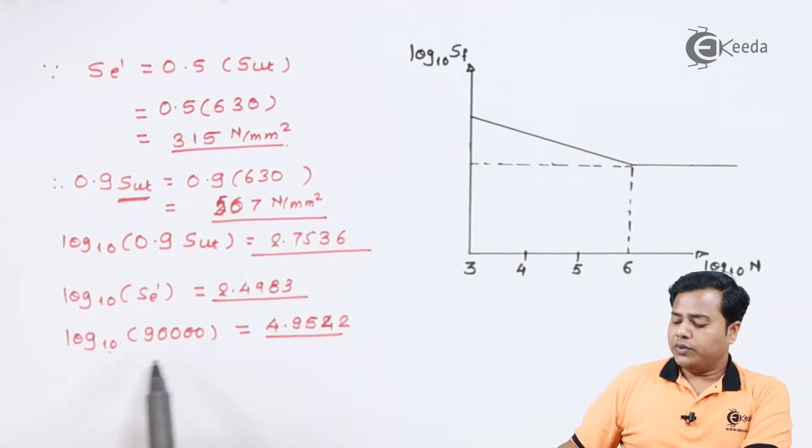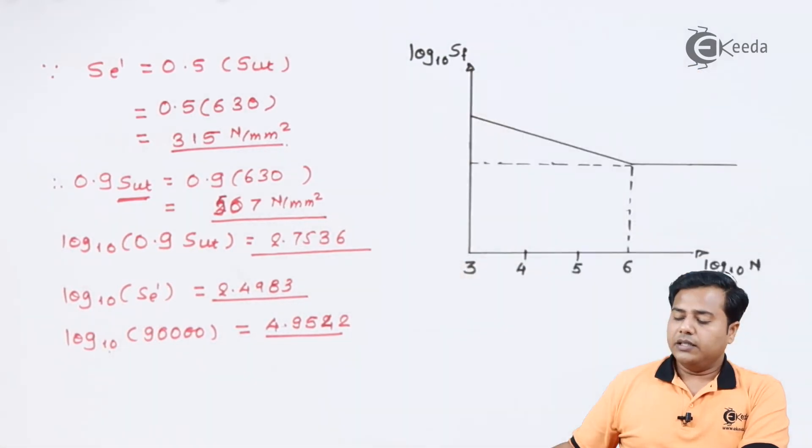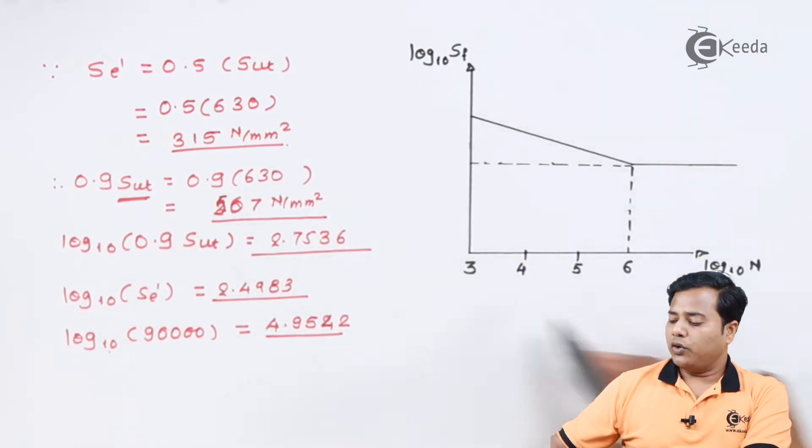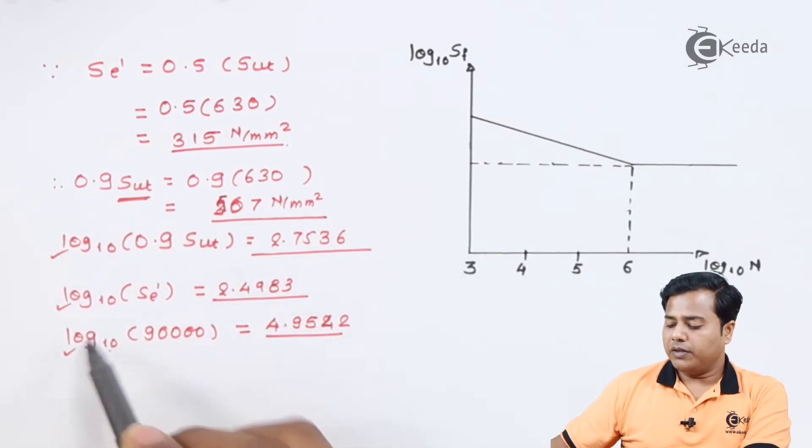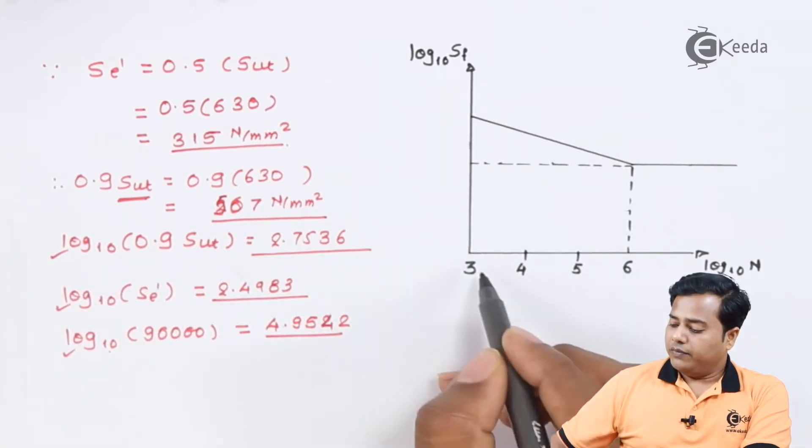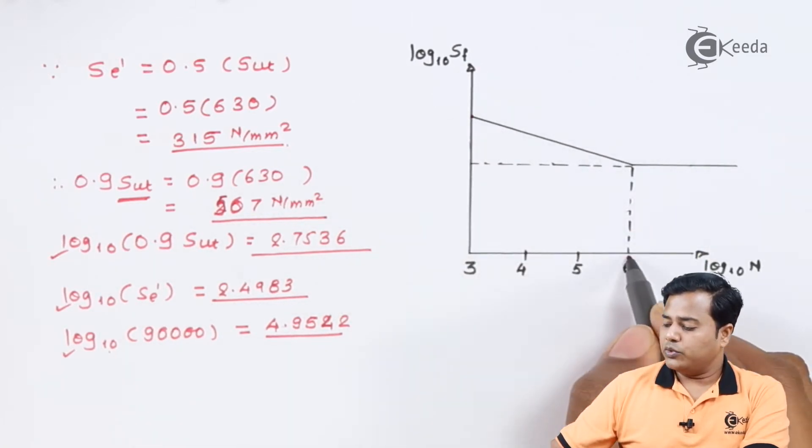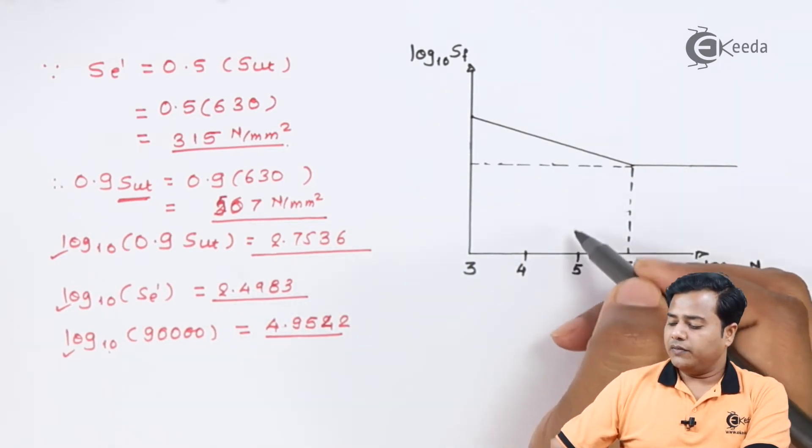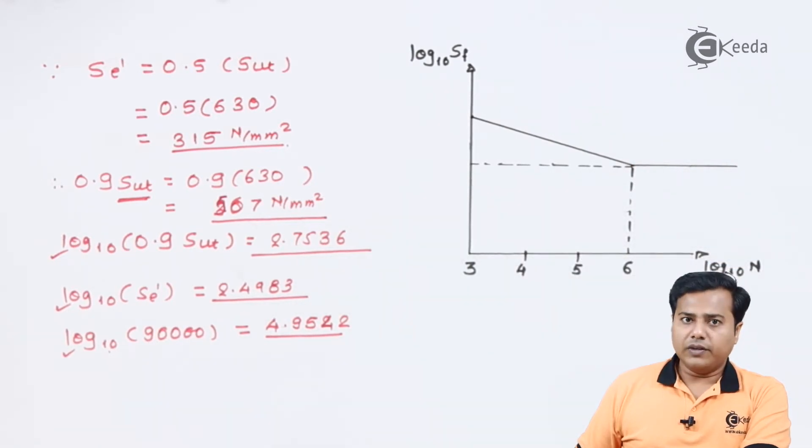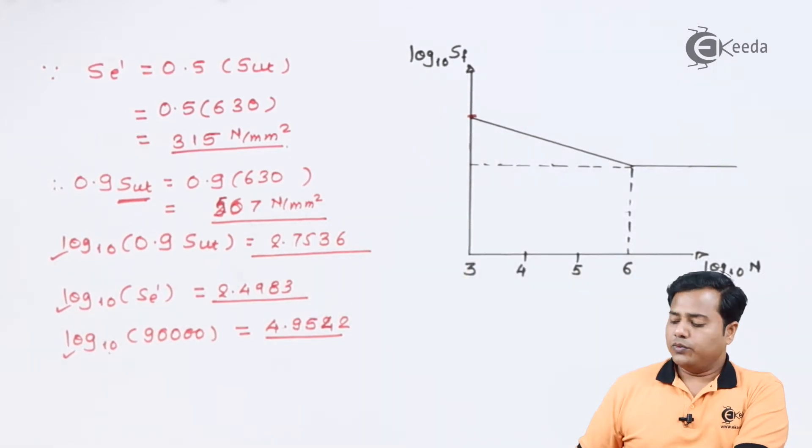Students, we need to understand that S-N curve is made up of the number of cycles and the endurance limit values. Of course, this is a log-log paper, and that's why we need to consider everything in terms of their logarithmic values. We know that at 10 raise to 3 cycle we are starting with the first value, and 10 raise to 6 we are going to finish with the last value. In between that we need to find out the required value.